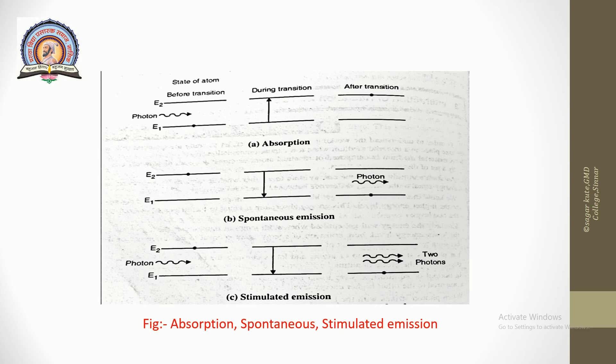Absorption: a photon incident on an atomic system excites an atom from lower energy E₁ to the higher energy level E₂. In this case, the atom in the lower state, after absorbing the incident energy, gets stimulated towards the higher energy level E₂. This process is known as absorption.